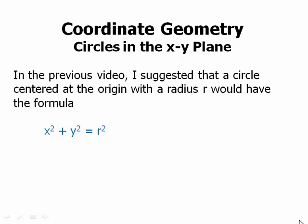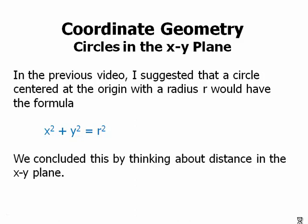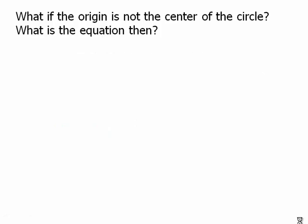In the previous video, I suggested that a circle centered at the origin with a radius of r would have the formula x squared plus y squared equals r squared. We concluded this by thinking about distance in the xy plane and in particular thinking about the application of the Pythagorean theorem to the coordinate plane.